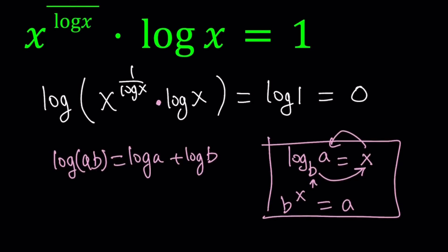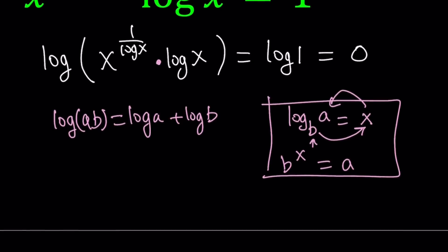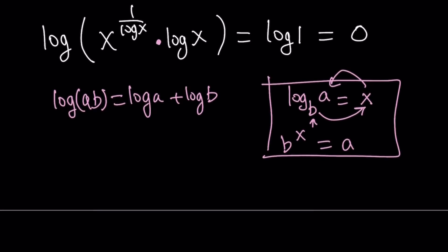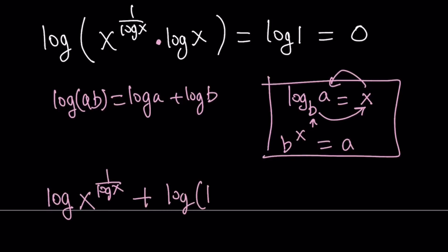Let's go ahead and use that property, so the product turns into a sum. In other words, we get log of x to the power 1 over log x, plus log of log x, equals log 1, which is 0.